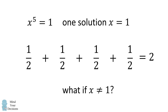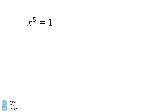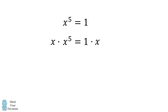But what if x is not equal to 1? We will show that we get exactly the same result — the sum of the fractions is equal to 2. To see why, we'll start with x to the power of 5 is equal to 1, then multiply both sides by x to get x to the power of 6 is equal to x.